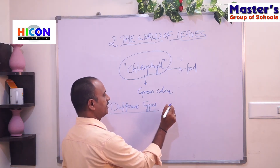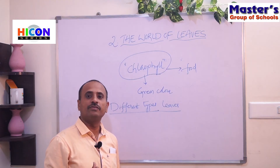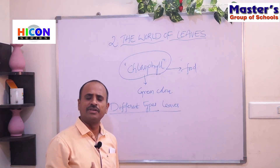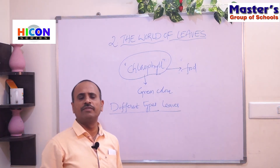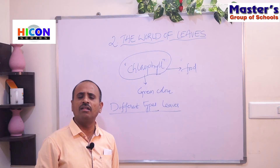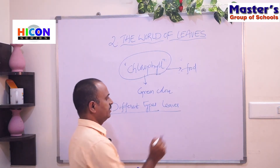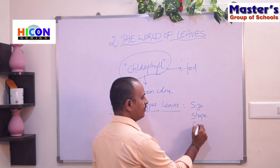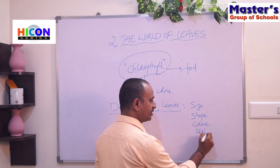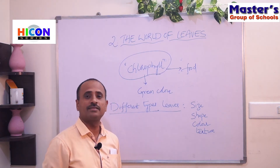Now, different types of leaves. As we discussed in the previous chapter, there are different types of plants — plants which grow in the desert, in marshy areas, in hilly areas. All plants do not have the same type of leaves. Different types of plants have different types of leaves — they differ in their sizes, shapes, colors, and textures.